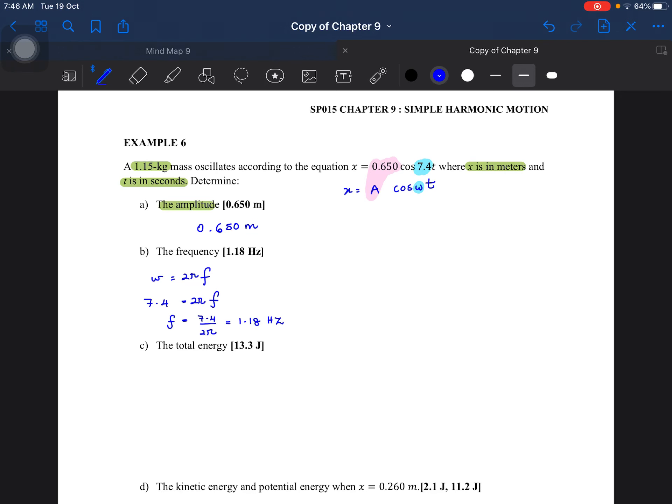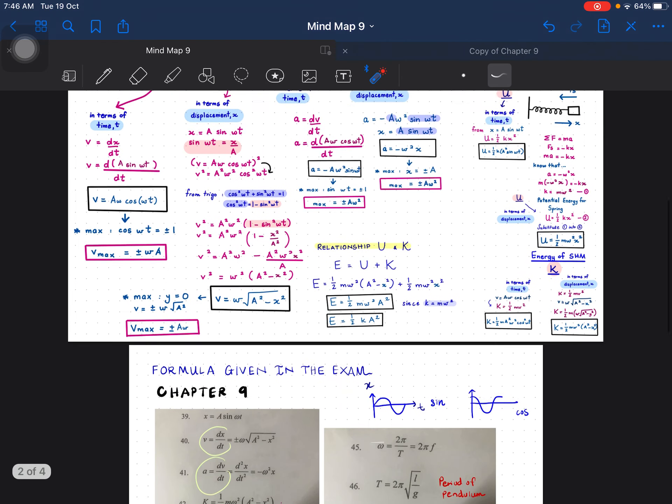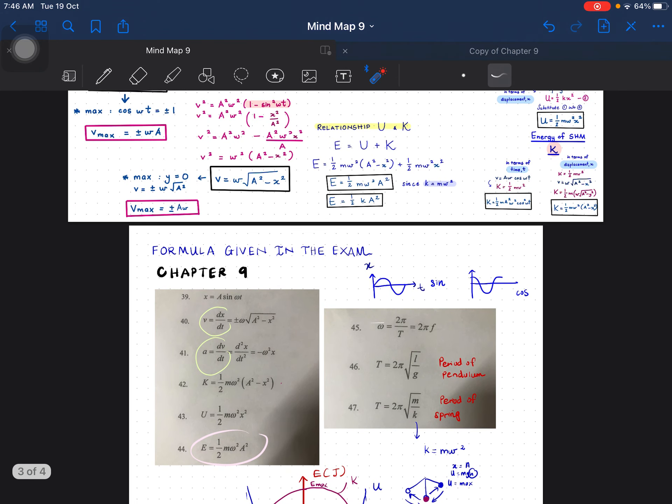And then, dia minta total energy. So, take a look at the mind map. So remember, total energy is this one, U plus K. So either you use this one or you use this one. Since dia tak kasi kita nilai K, so we use this one. E equals to half K x squared.